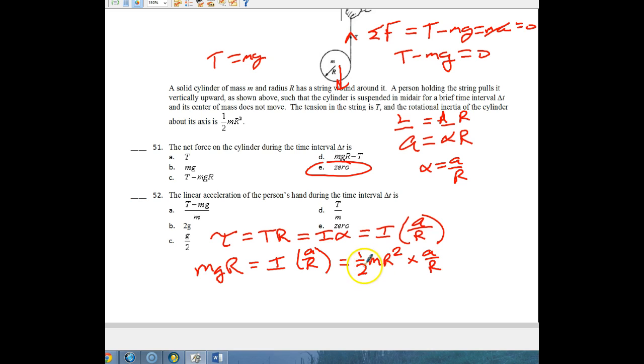So mgR is equal to one half mR squared times A over R. So mgR is equal to one half m times A times R. We can cancel the m and the R on both sides. And so now we can multiply both sides by 2. We're going to get 2g is equal to A. And so that is our linear acceleration.